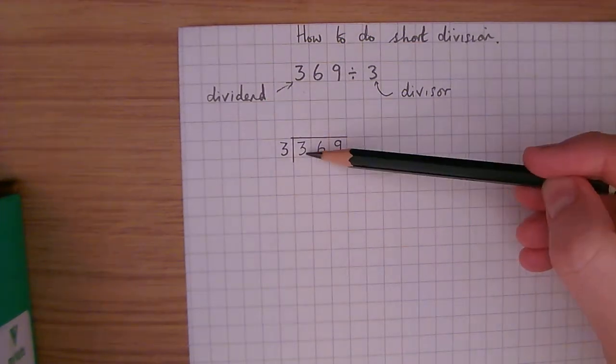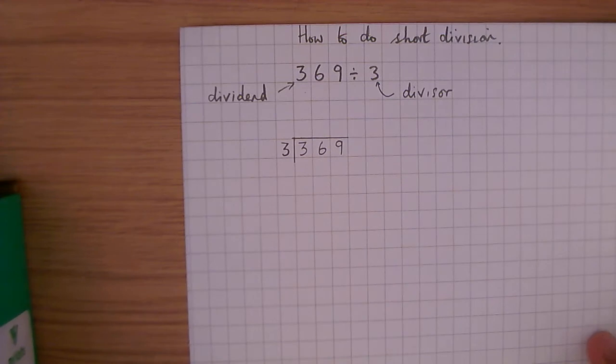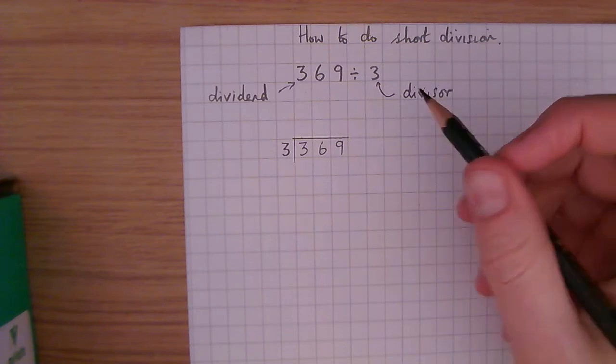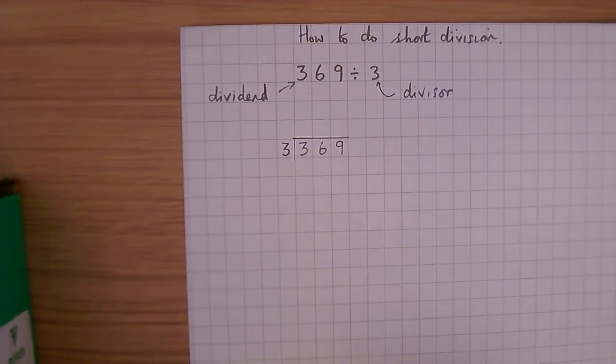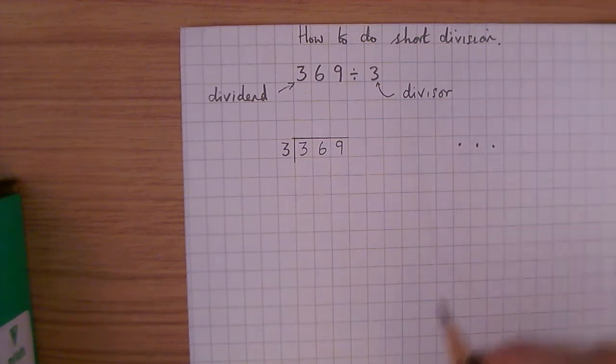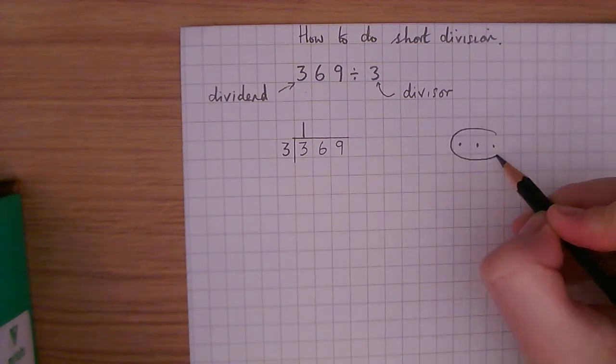The divisor goes on the outside of the bus stop, and the dividend goes on the inside. I'm going to show you this example, and our first example is a straightforward example because there's no remainders involved. So the first thing we're going to do is 3 divided by 3. 1, 2, 3. 3 divided by 3 is 1. We can make one group.